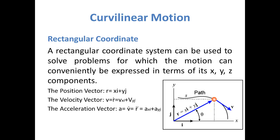The position vector R is equal to x·i plus y·j. The velocity vector v is equal to r-dot, which equals v_x·i plus v_y·j. Velocity is the rate of change of the position vector with respect to time.